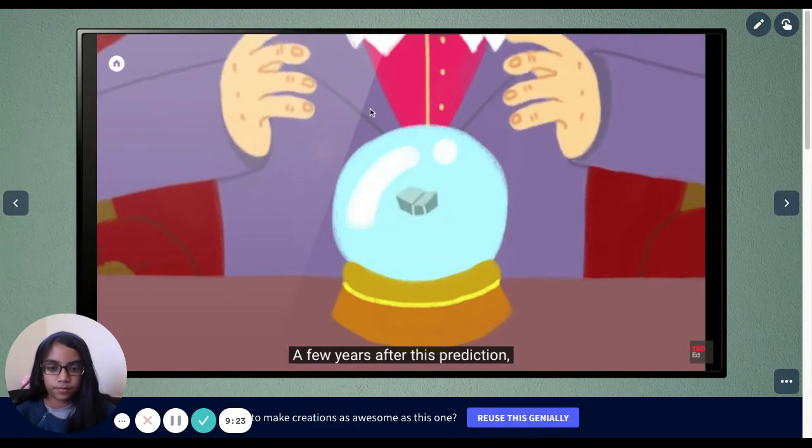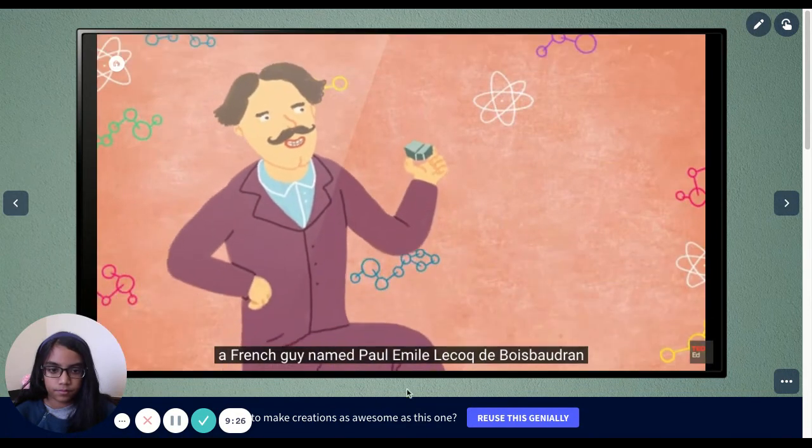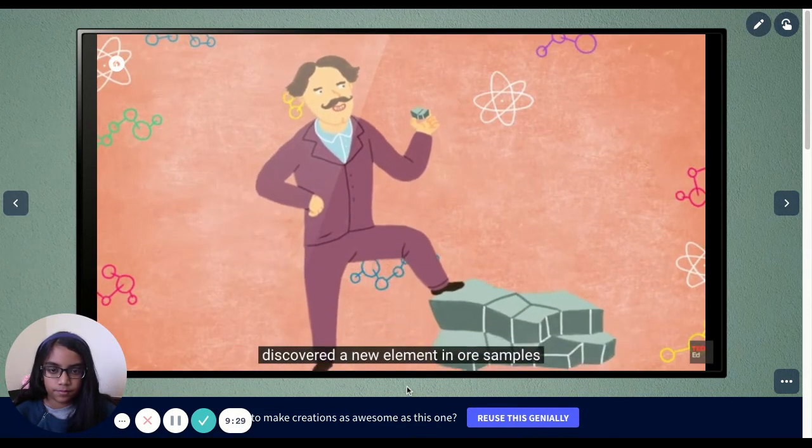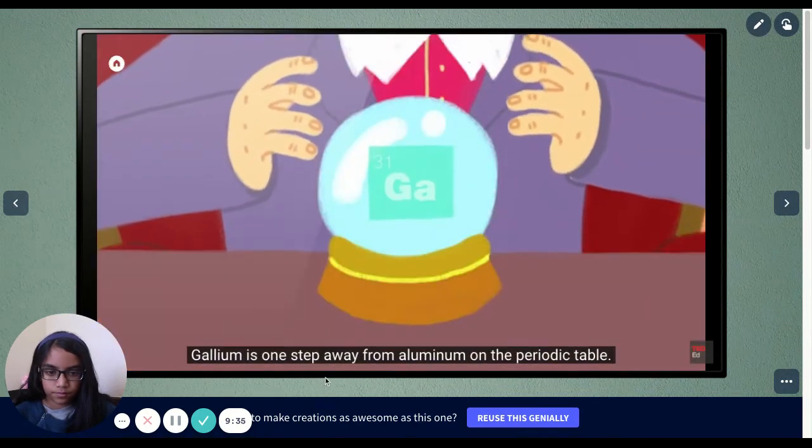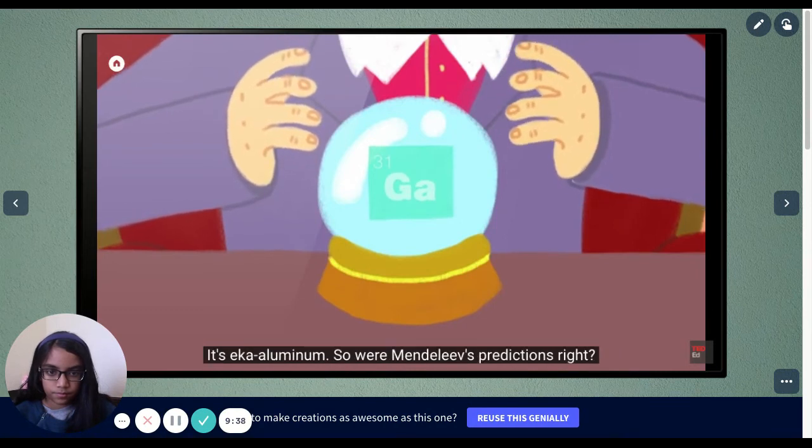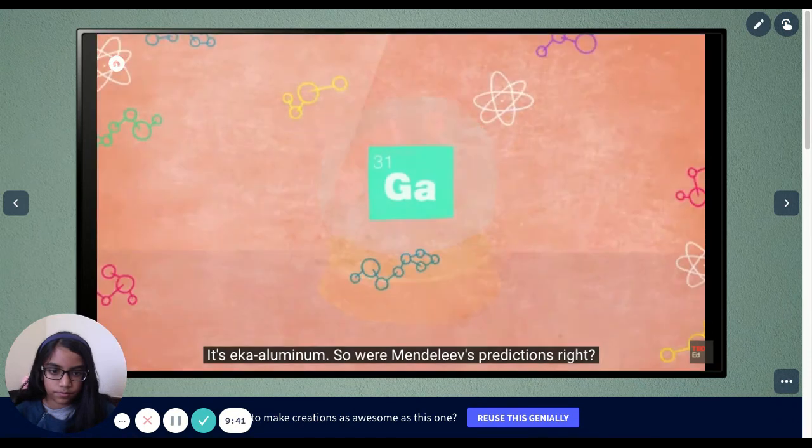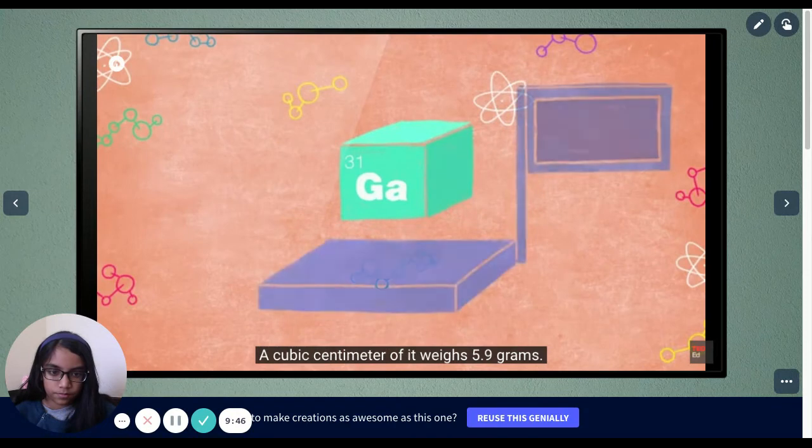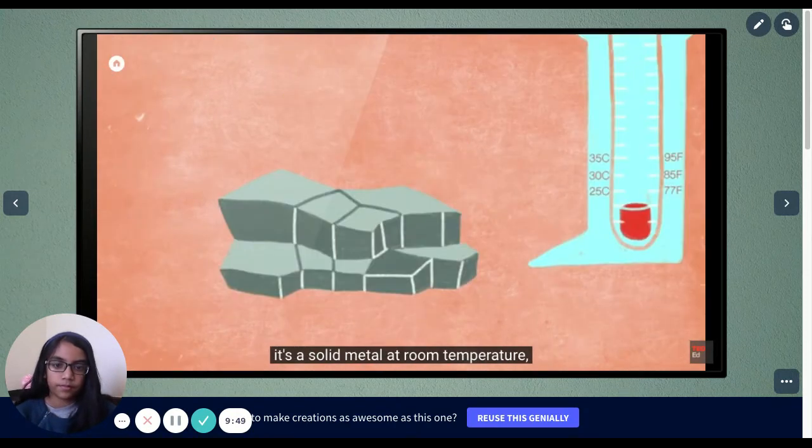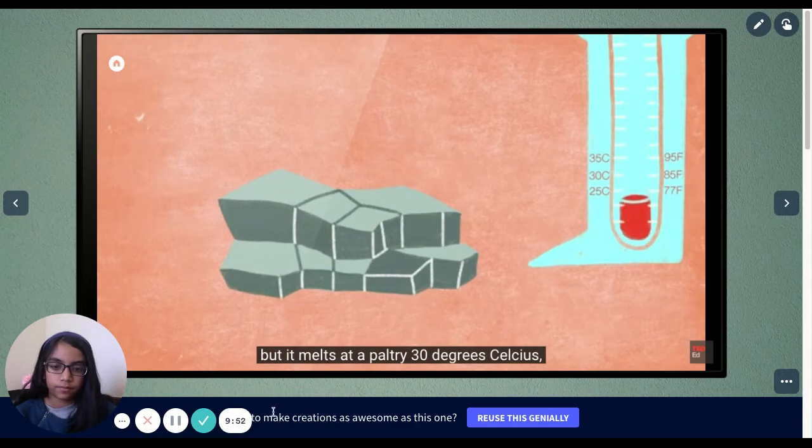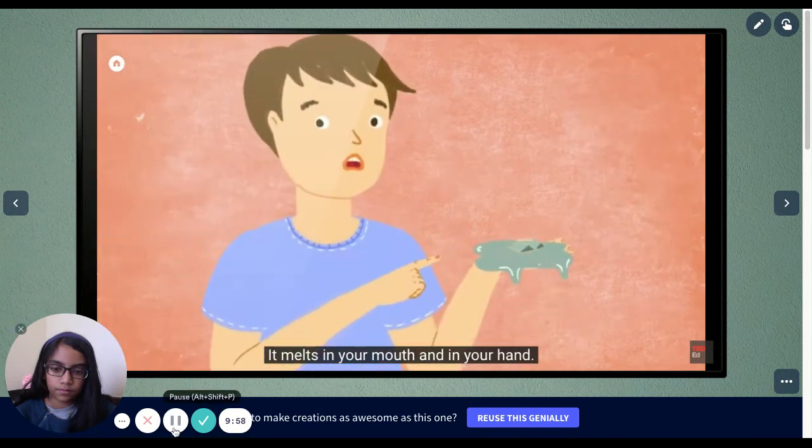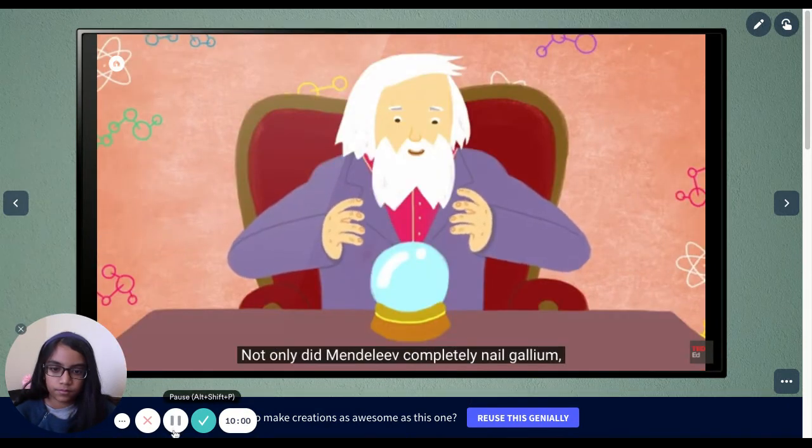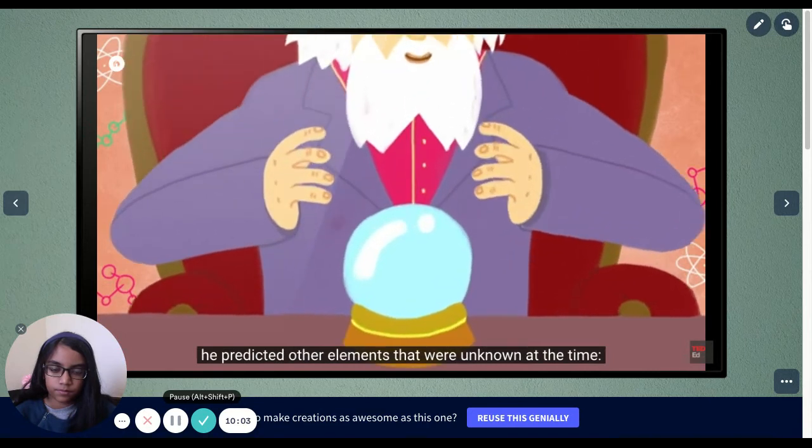A few years after this prediction, a French guy named Paul-Émile Lecoq de Boisbaudran discovered a new element in ore samples and named it gallium after Gaul, the historical name for France. Gallium is one step away from aluminum on the periodic table. It's eka-aluminum. So were Mendeleev's predictions right? Gallium's atomic weight is 69.72. A cubic centimeter of it weighs 5.9 grams. It's a solid metal at room temperature, but it melts at a paltry 30 degrees Celsius, 85 degrees Fahrenheit. It melts in your mouth and in your hand.